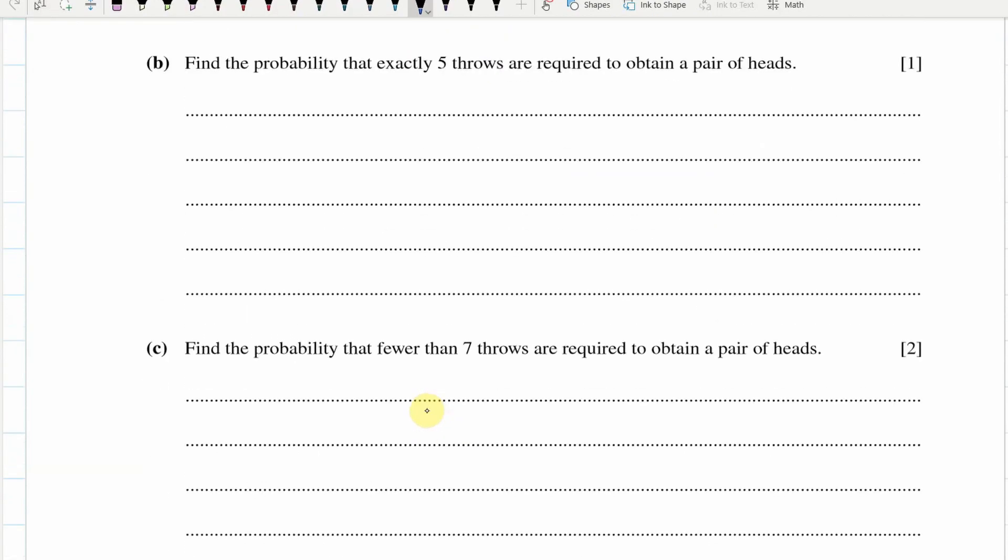Find the probability that exactly five throws are required. Okay, so if there's five throws, that means four fails, and then success. So that means three quarters, and that's to the power of four, so fail four times, and then we get our success on the fifth try. In the calculator, to three significant figures, that's 0.0791.